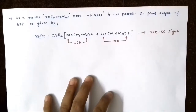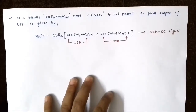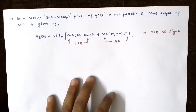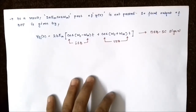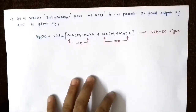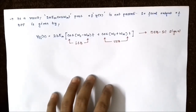Here I have discussed one of the important methods of generation of a double sideband suppressed carrier signal using the balanced modulator method. In my upcoming video, I will be discussing the ring modulator method for generation of DSBSC signal. I hope you liked this video — please subscribe to Engineering Tutorial for more videos related to electrical, electronics, communication, and instrumentation engineering. Have a great day, thank you.